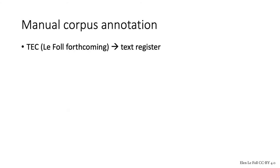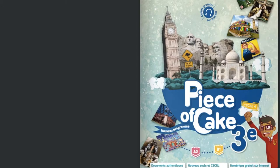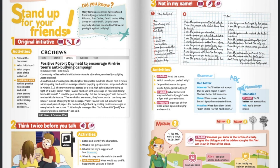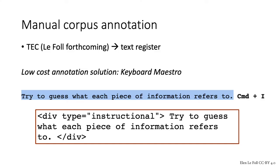For my own corpus, I decided to manually annotate text register. Why text register? Well, let's take a look at a modern school EFL textbook. We find a number of individual texts and different text registers even on a single double page. Here we have an informative text, another informative text, some instructions, a listening activity with spoken interactions, a poem, explanations, and many other text types and text registers. So I decided to annotate these text registers within the textbooks manually.